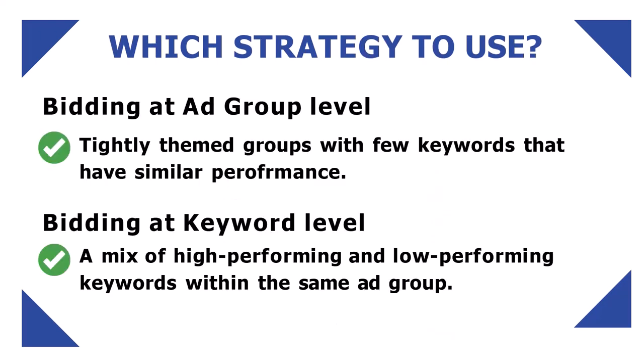But which strategy should you use? If the keywords in your ad groups are tightly themed and you use very few keywords per ad group, bidding at ad group level could be a good option. If you have a mix of high-performing and low-performing keywords within the same ad group and want to allocate more budget towards the high-performing ones, bid at keyword level.